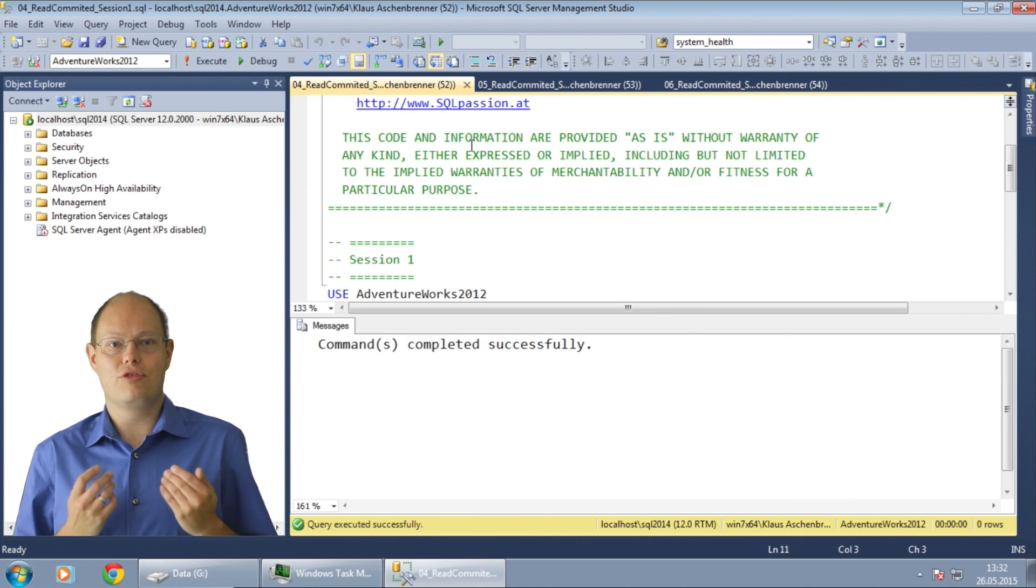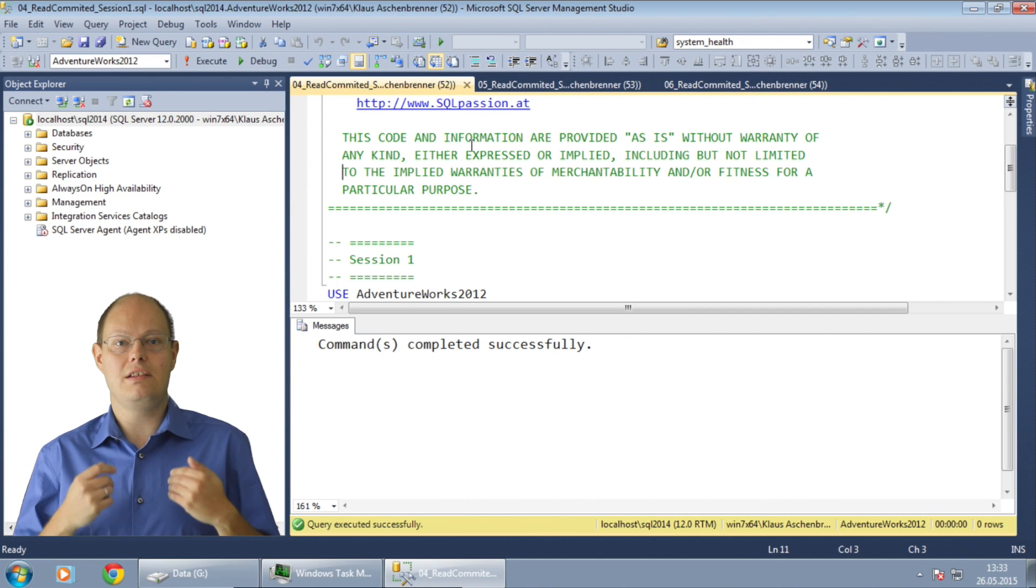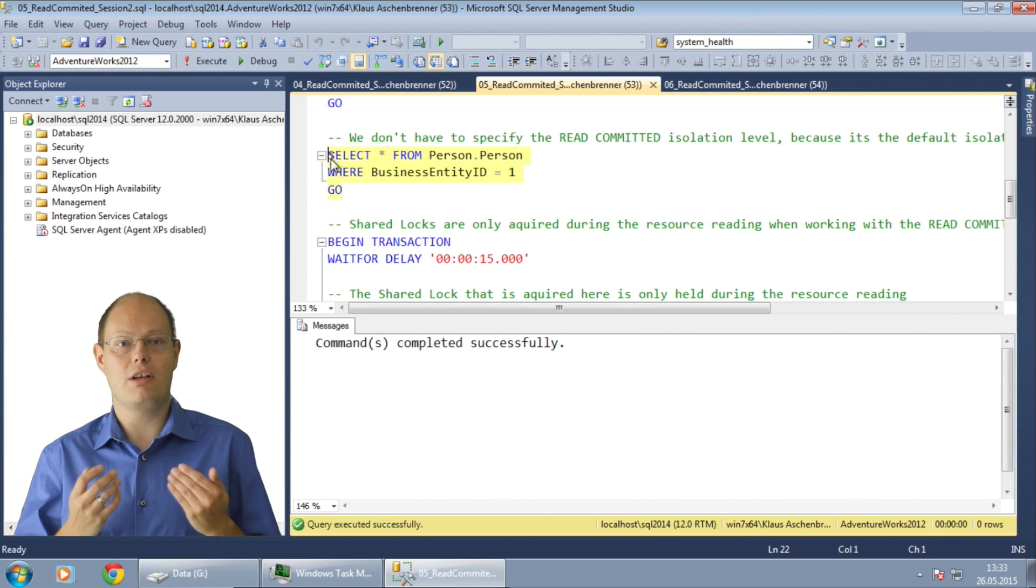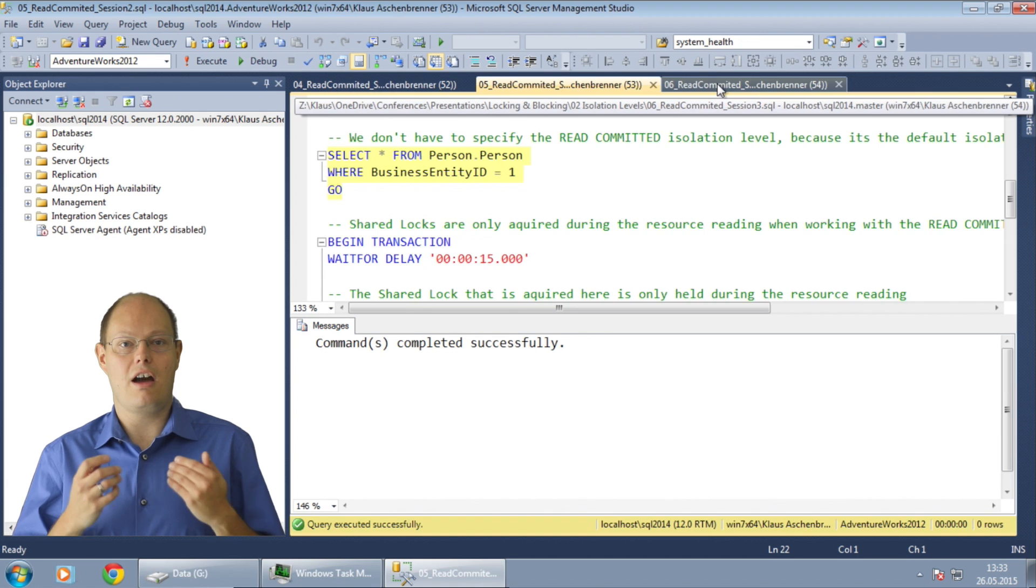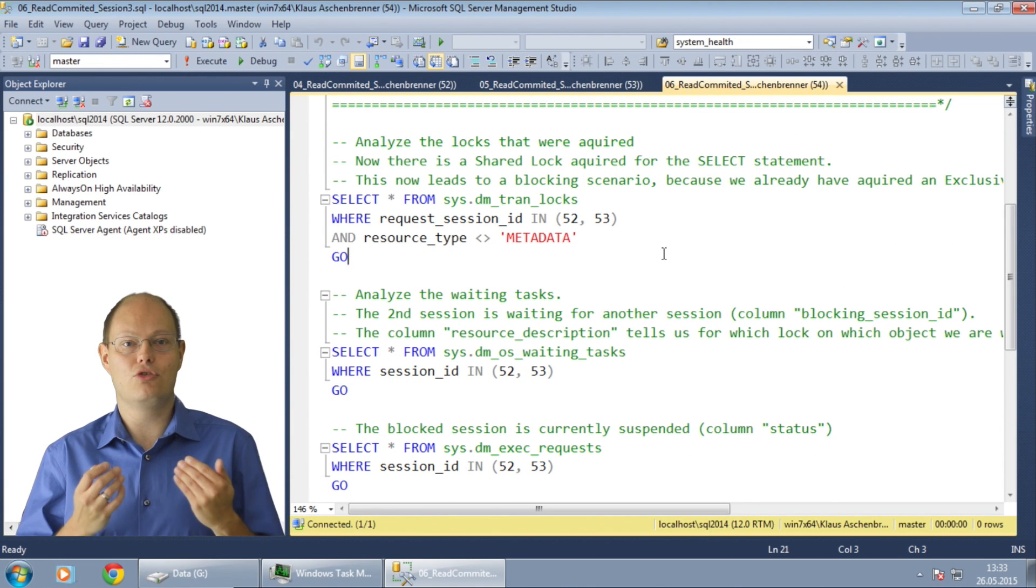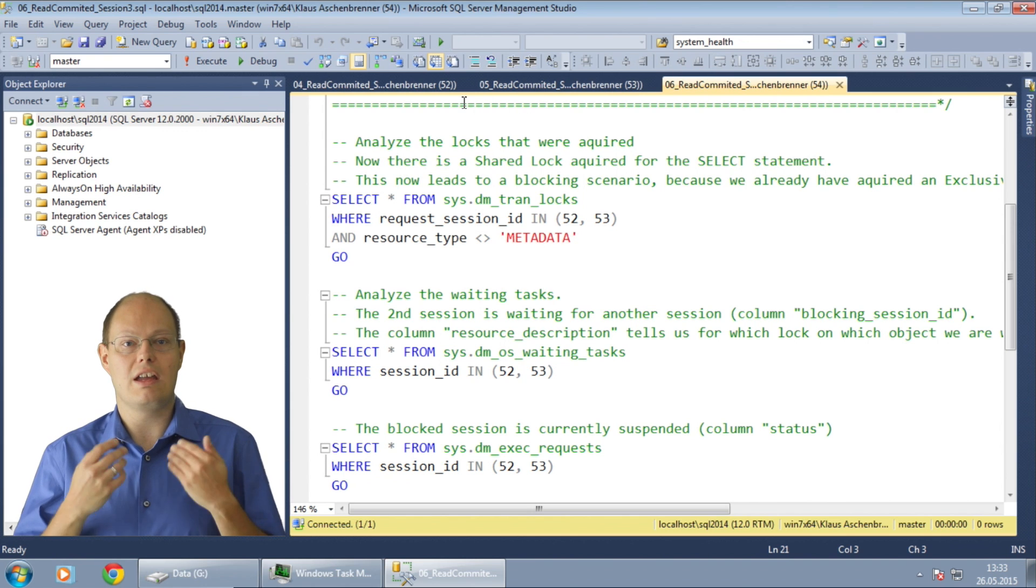In this demonstration I want to show you the basics behind the isolation level read committed and how easy it is to get into a blocking situation. I have here three different sessions in front of me. The first session performs a data modification against the table person.person. The second session tries to read from that table. And finally I will use the third session to show you how you can troubleshoot a blocking situation in SQL Server.